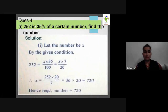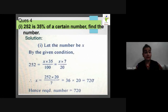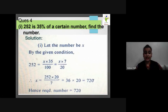Question number four: 252 is 35% of a certain number — find the number. Let the number be x. So 35% of x = 252, meaning (35/100) × x = 252. To find x, move 100 to the numerator: x = (252 × 100)/35. Simplifying, we get x = 720.